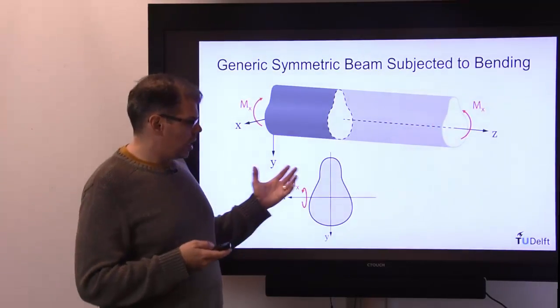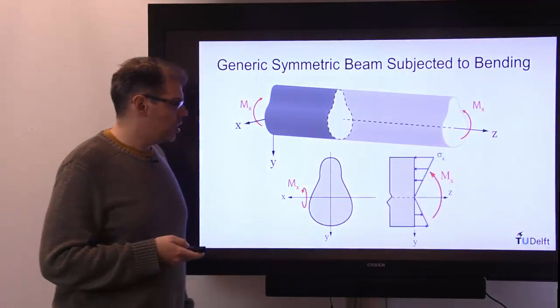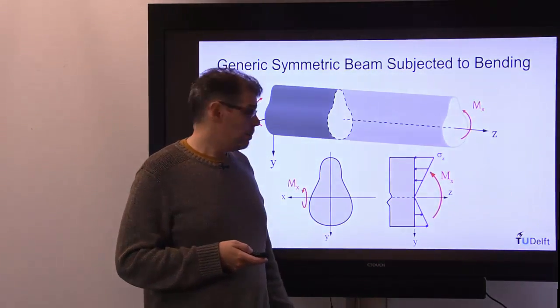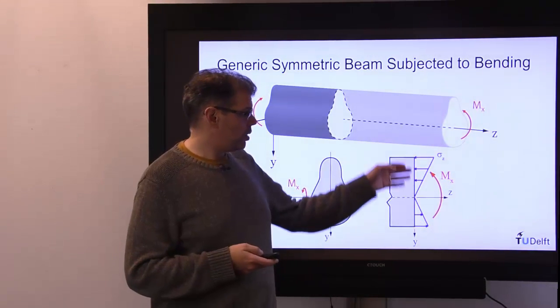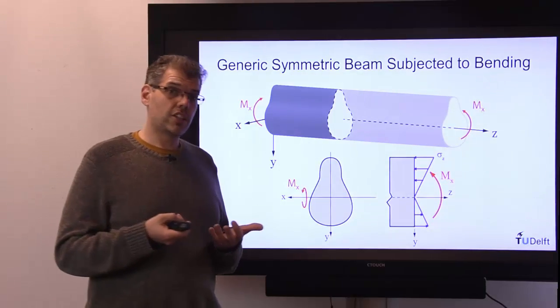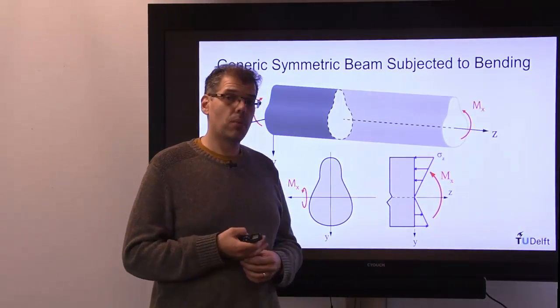If we now rotate that cross-section, we can then plot our linear normal stress distribution, sigma z, that will be tension on the bottom, compressive on the top, and the resultant of that stress distribution is precisely that moment, mx.